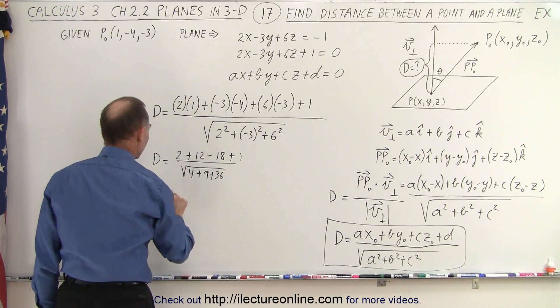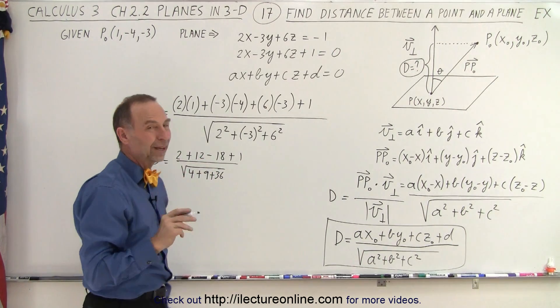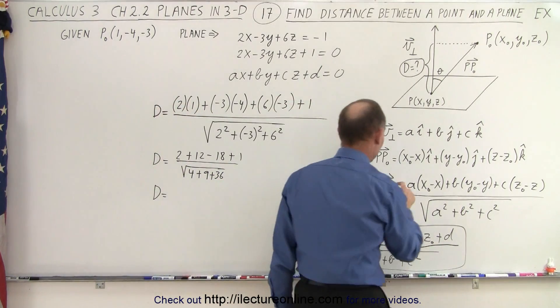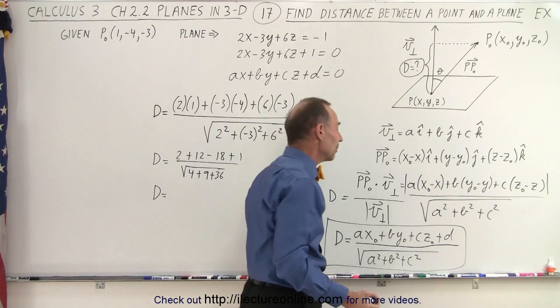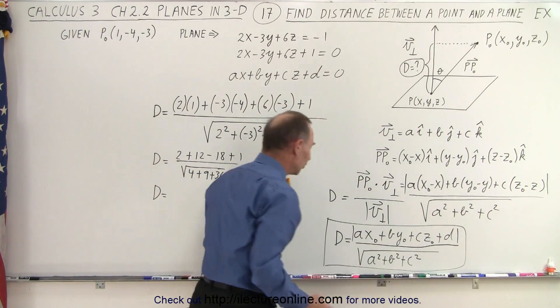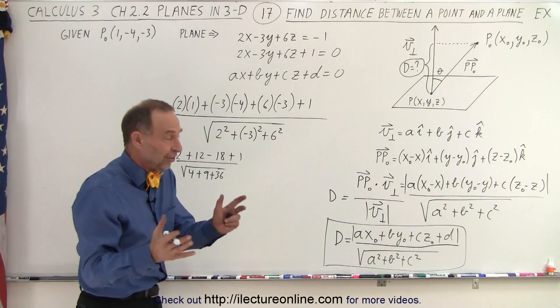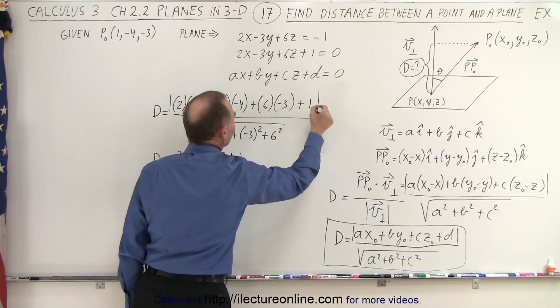So d is equal to minus 18. And of course, again, what we need to be careful of is that this distance right here has to be a positive magnitude. So we need to make sure we put absolute value signs there because the distance cannot be a negative distance. It's got to be positive distance. So again, we need to take the positive value of that.